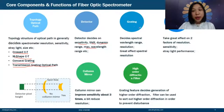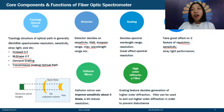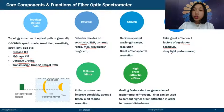Third is the grating, which decides the spectrometer's wavelength range and greatly affects resolution. Fourth is the slit size, which affects both resolution and sensitivity — the smaller the slit, the better the resolution but the weaker the sensitivity. Slit size also affects stray light performance.